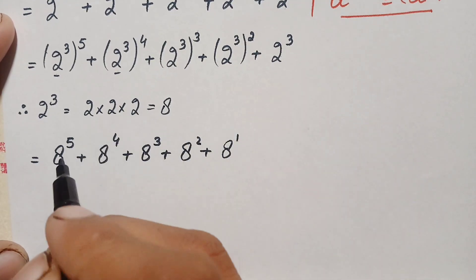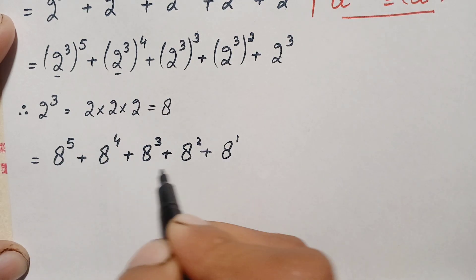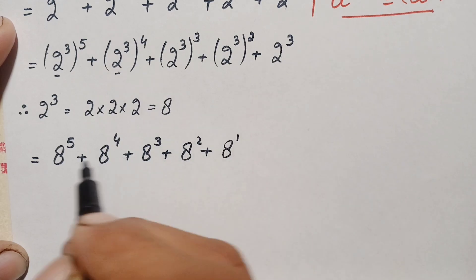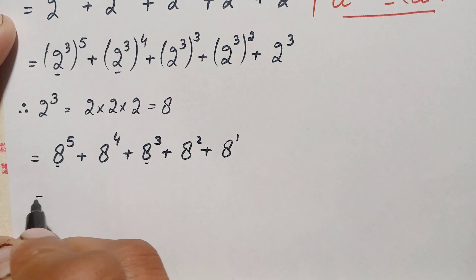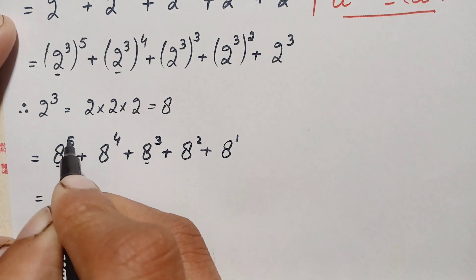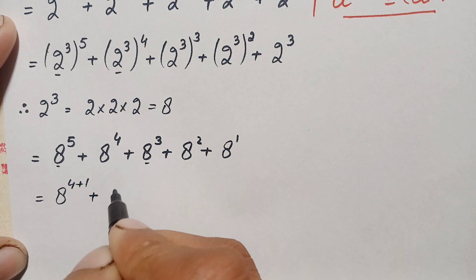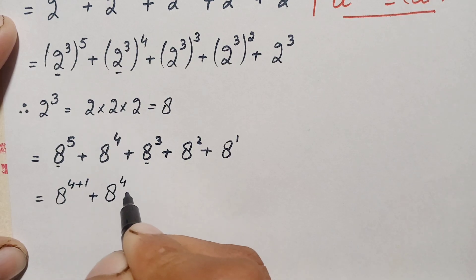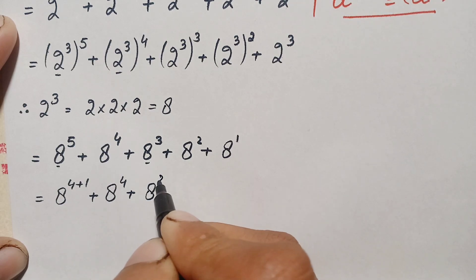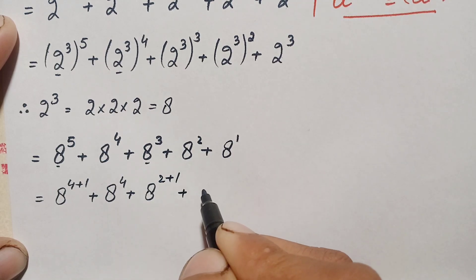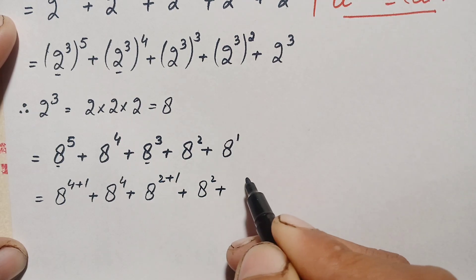Our next step is to make certain powers the same. We write power 5 as 4 plus 1, and power 3 as 2 plus 1. So the expression becomes a raised to power 4 plus 1 plus a raised to power 4 plus a raised to power 2 plus 1 plus a raised to power 2 plus a.